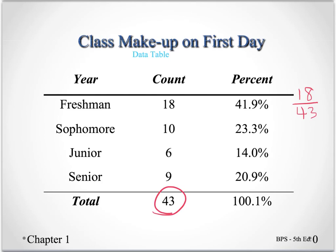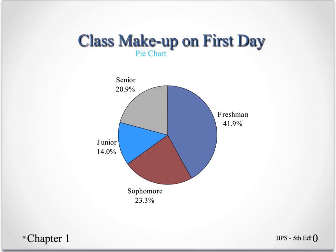The total is shown down here. Now, why does this add up to 101%? How do we have a higher percentage than we have people in the class? Well, that's from rounding. Each of these percents is rounded to one decimal place, and when we do that, sometimes it throws it off by a tenth or maybe a couple tenths of a percent.